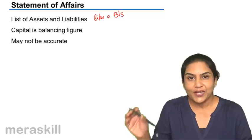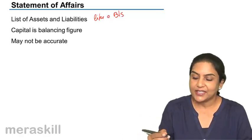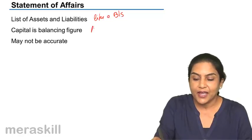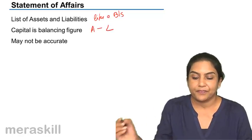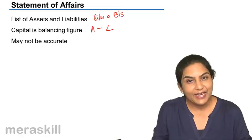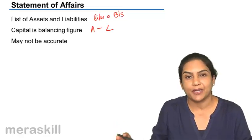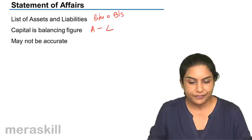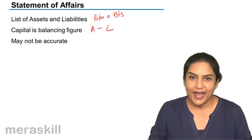Once we list the assets and liabilities, assets minus liabilities gives us the capital — it is the balancing figure. It may not be entirely accurate.